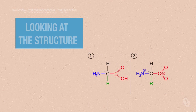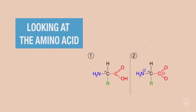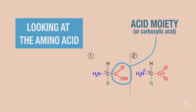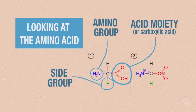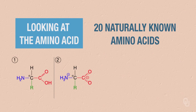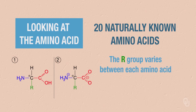If we look at an amino acid, notice it has several components. First, we have the acid moiety, or a carboxylic acid. We have an amino group — an NH2 — and we will have some type of side group. There are 20 naturally known amino acids, so this R group on the side varies between each of those amino acids.